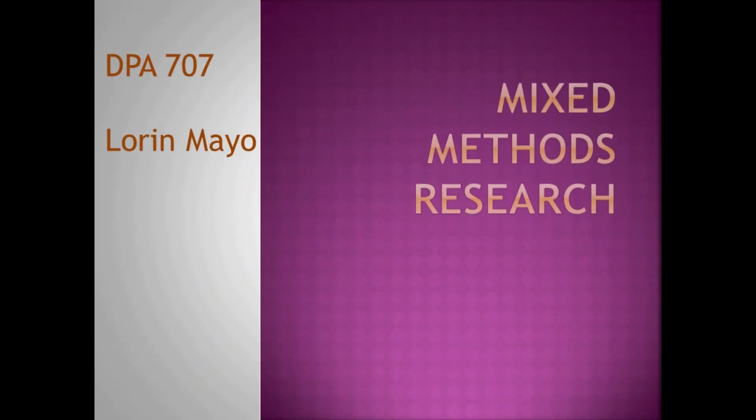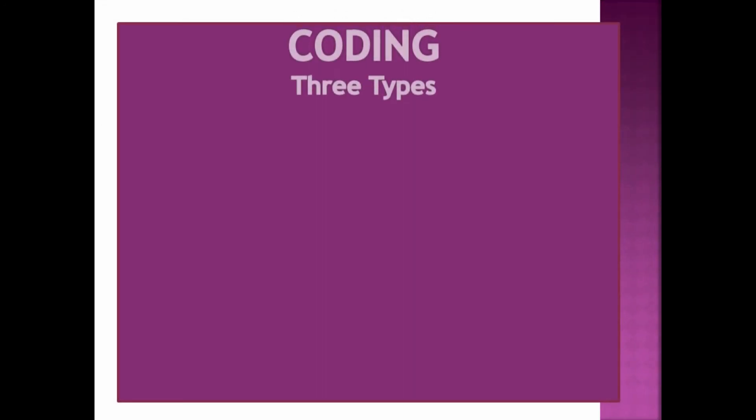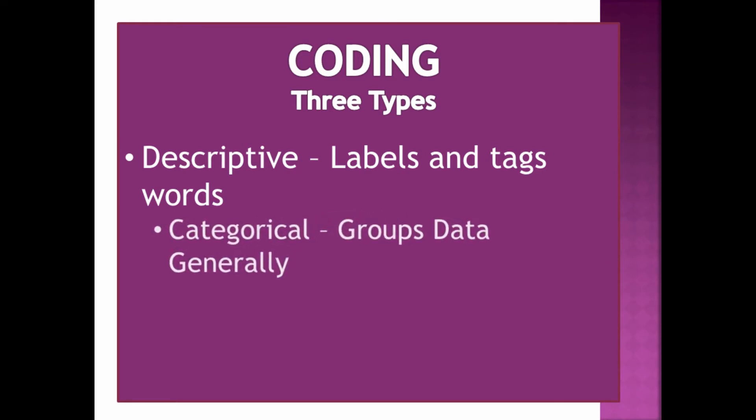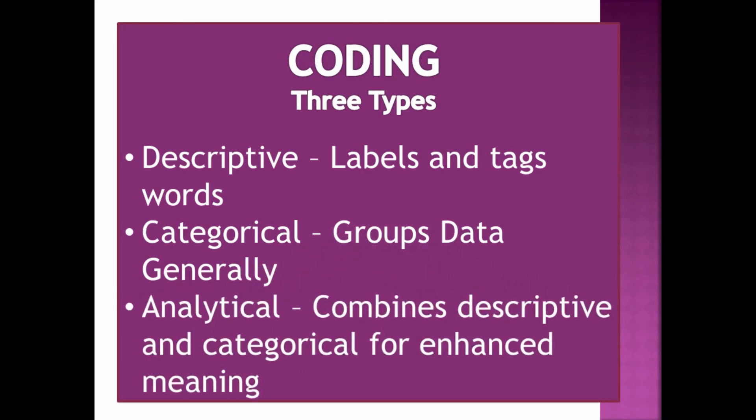Let's talk about patterns in coding. The process of coding will assist in recognizing patterns. There are three types of coding. Descriptive codes are the labeling or tagging of a participant's words. Categorical codes is grouping data into a more generalized state. And analytical codes is a combination of the first two codes to further add depth and breadth of meaning.